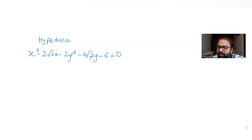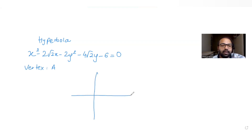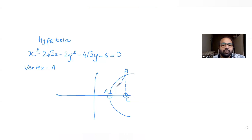This is given to us, and further they are telling us that the vertex is at point A. It is also given to us that B is one of the endpoints of the latus rectum. Let's say this is our hyperbola — this is our vertex point A, and this is one of the endpoints of the latus rectum from the foci. The point of focus here is C.